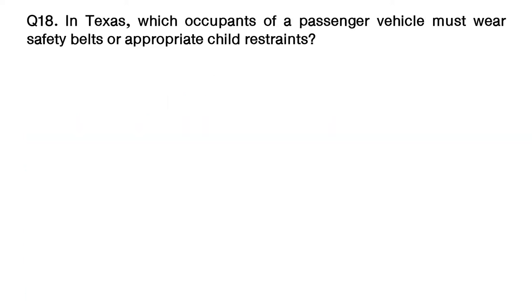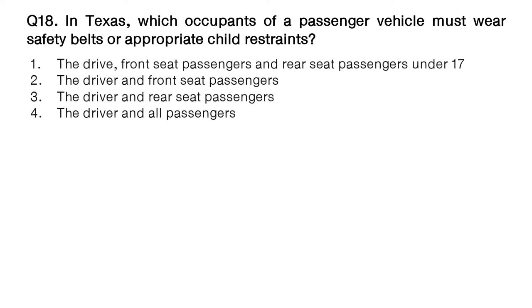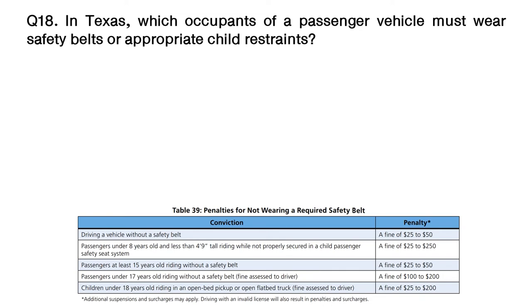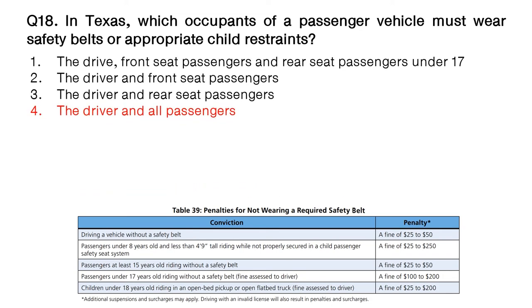Question: in Texas, which occupants of a passenger vehicle must wear safety belts or appropriate child restraints? Option number 1: the driver, front seat passengers, and rear seat passengers under 17. Option number 2: the driver and front seat passengers. Option number 3: the driver and rear seat passengers. Option number 4: the driver and all passengers. The answer is option number 4: the driver and all passengers.